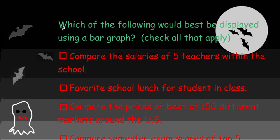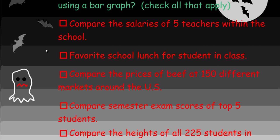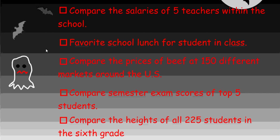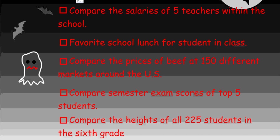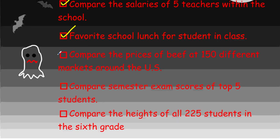Here we're looking at: which of the following would best be displayed using a bar graph? Check all that apply. We have to determine which of these is going to work best for a bar graph. Go ahead and discuss it, and then we'll go through the answers. Which ones did you check off for a bar graph? It's not all of them. Compare the salaries of five teachers within a school - yes, you can compare that and draw a bar graph for five teachers. Favorite school lunch for students in a class - yes, again you could compare several different types of school lunches.